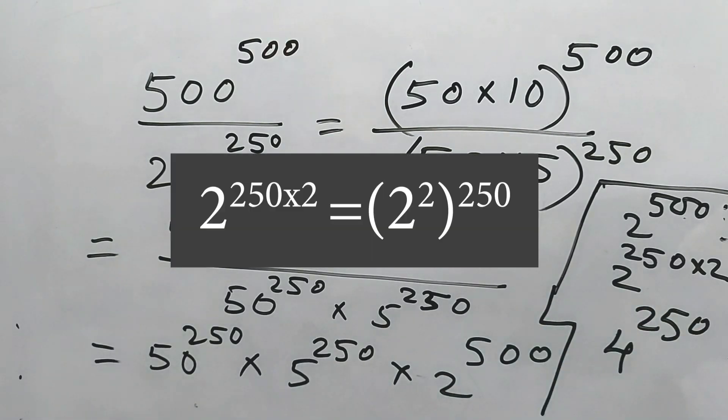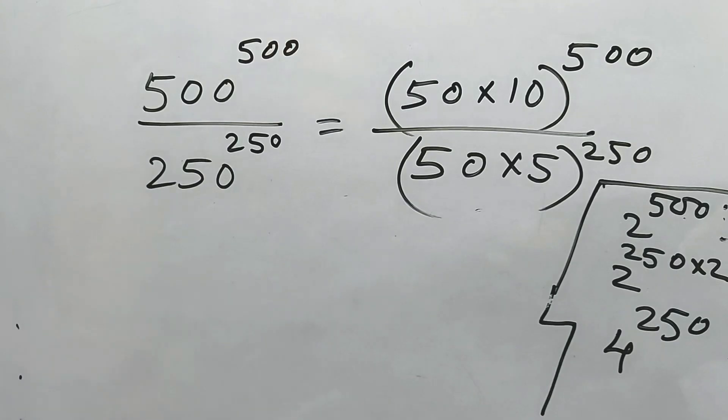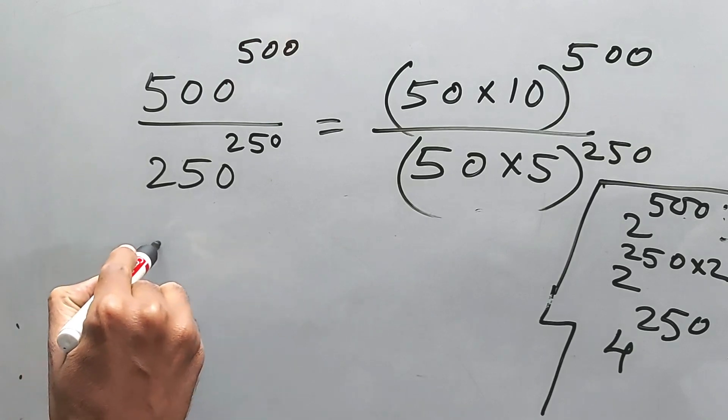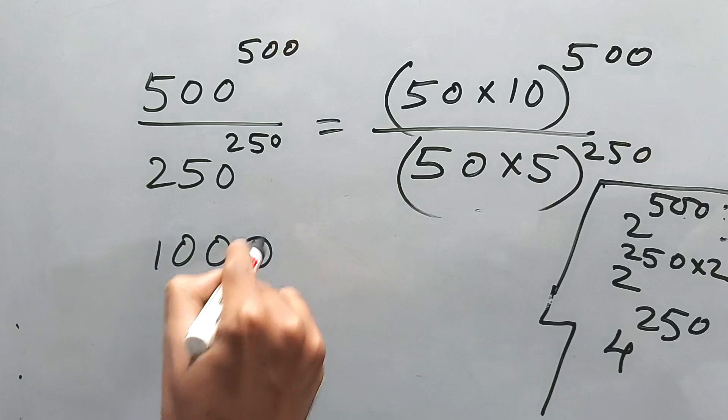Now the powers are the same, so it will be 50 times 5 times 4. That means 50 times 5 we know is 250. 250 times 4 is 1000 to the power 250.